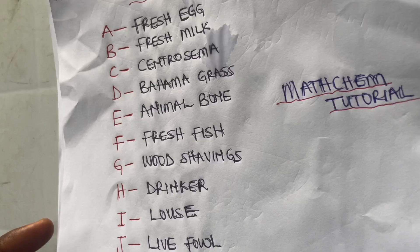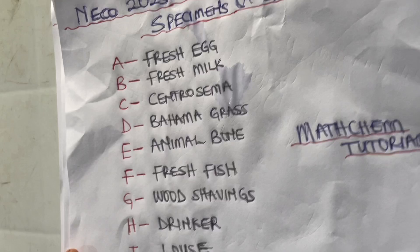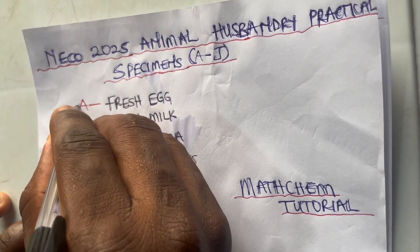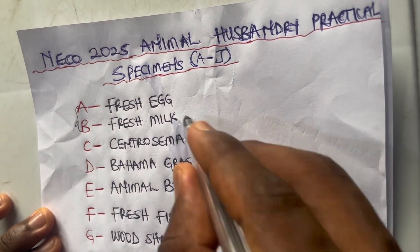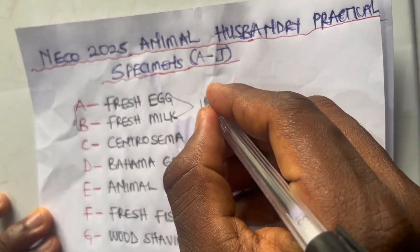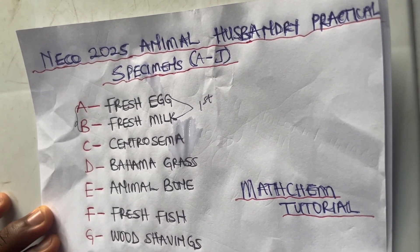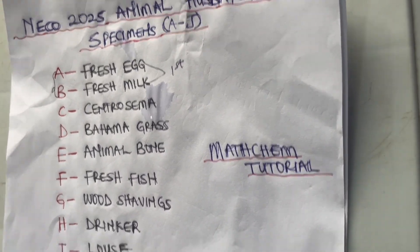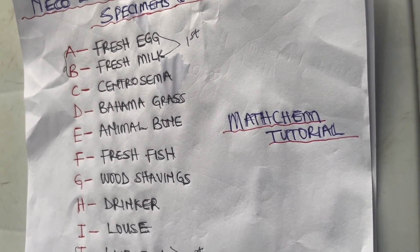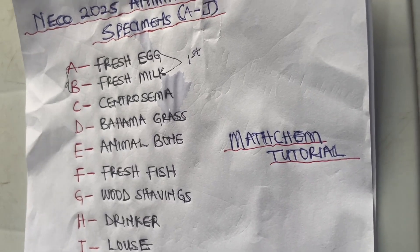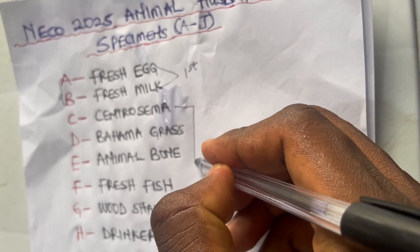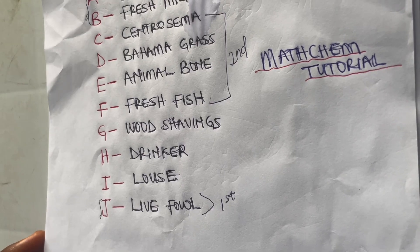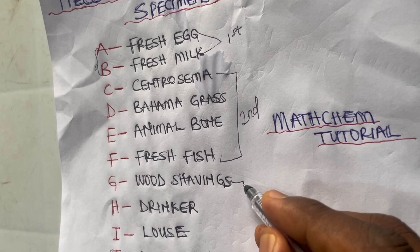I will be grouping the specimens into three categories. The first category is specimens A, B, and J. The second category is specimens C, D, E, and F. The third category is specimens G, H, and I. In this video I will explain the first category, and in my next video (Part B) I will cover the second and third categories.